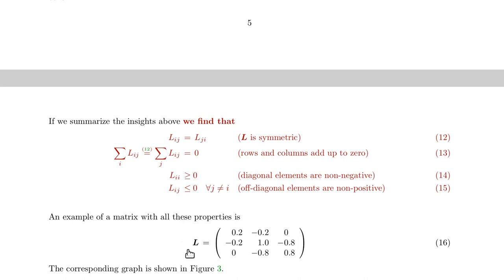So an example of such a matrix is shown here. So we have positive diagonal elements. We have negative off-diagonal elements, and the rows and the columns add up to zero. So these are the conditions of the Laplacian matrix, and it's symmetric.